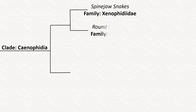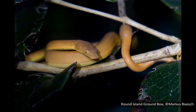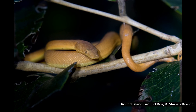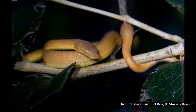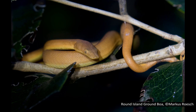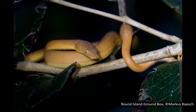The next family is Bolyeriidae, which has only a single living species — the Round Island ground boa. There was a second species, the Round Island burrowing boa, but there has not been a confirmed sighting since 1975 and it is believed to have gone extinct. They are endemic to Round Island, one of the offshore islands of Mauritius. They reach lengths of 1.5 metres or 5 feet and are known for their ability to change colour — appearing darker during the day when inactive and paler at night. Their main prey are skinks and geckos.